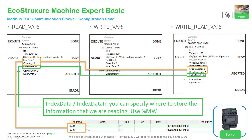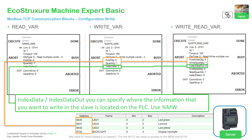You need to specify the first object on the other device, the quantity of memory words you want to read, and where that data is going to be located in the M221. So the first two parameters come from the other PLC or device, and the index data indicates where you want to locate the information in the M221. For the write direction, specify where to write the information on the other side, the amount of data, and where the M221 will take the data from to send to the other side.